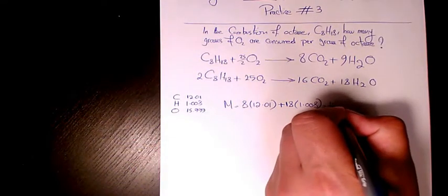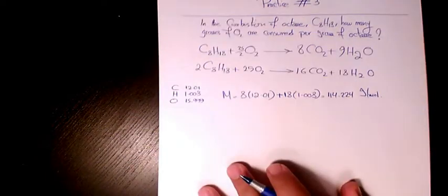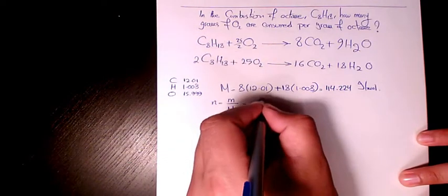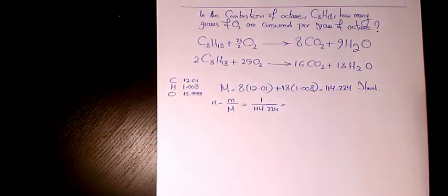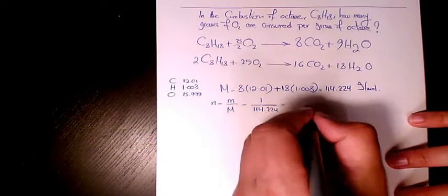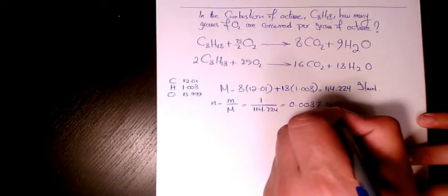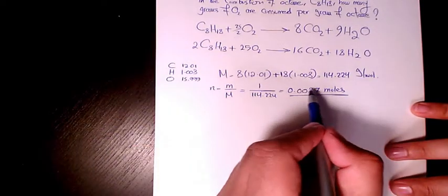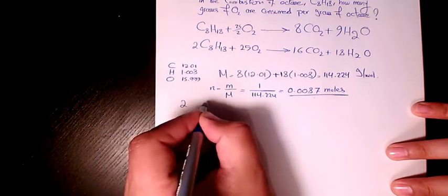This gives us 114.224 grams per mole. So n equals m divided by M, which is 1 divided by 114.224, which equals 0.0087 moles. That's the number of moles of octane.